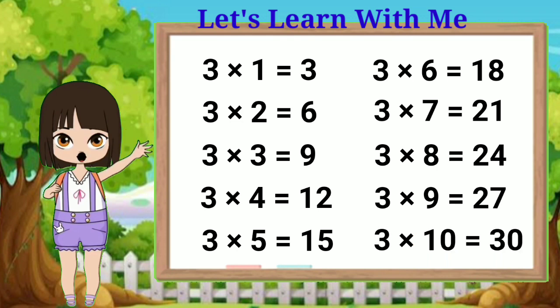Now, let's do it again. Three ones are three, three twos are six, three threes are nine, three fours are twelve, three fives are fifteen, three sixes are eighteen, three sevens are twenty-one, three eights are twenty-four, three nines are twenty-seven.